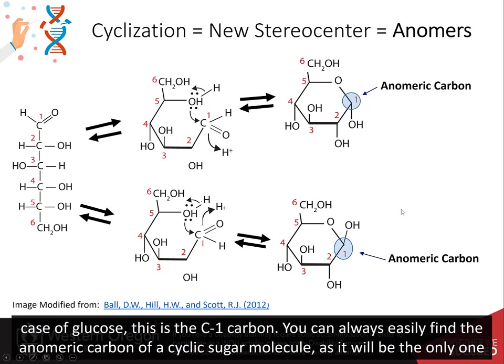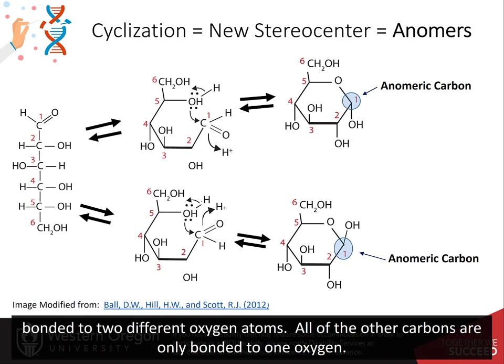The carbon that previously contained the aldehyde or the ketone is called the anomeric carbon. In the case of glucose, this is the C1 carbon. You can always easily identify the anomeric carbon of a cyclic sugar molecule, as it will be the only one that is bonded to two different oxygen atoms. All of the other carbons are only bonded to one oxygen.